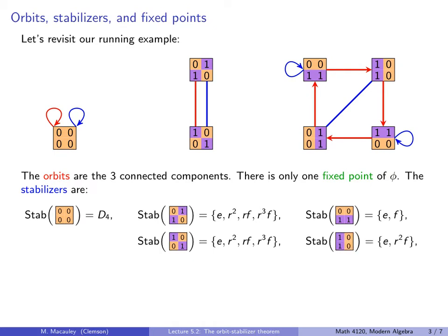Next, the stabilizer of 1001. What paths start here and end up here? Obviously the identity. But also if you start here and go R, R, F, you wind up back here as well. So the stabilizer of this element is {E, R²F}, and it's easy to check that none of the other six elements stabilize this.